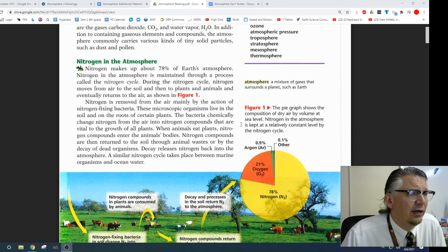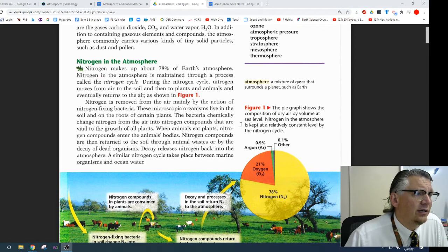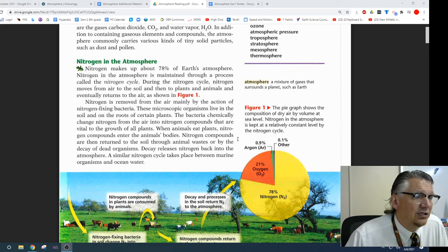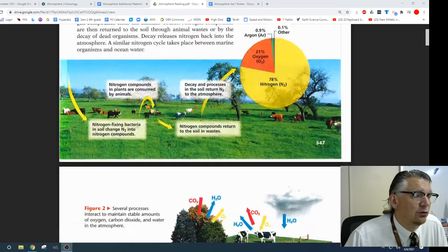Nitrogen is removed from the air mainly by an action of nitrogen-fixing bacteria. These microscopic organisms live in the soil and in the roots of certain plants. The bacteria chemically change nitrogen from the air into nitrogen compounds that are vital for the growth of all plants. When animals eat plants, nitrogen compounds enter the animal's bodies. Nitrogen compounds are then returned to the soil through animal waste or by the decay of dead organisms. Decay releases nitrogen back into the atmosphere.